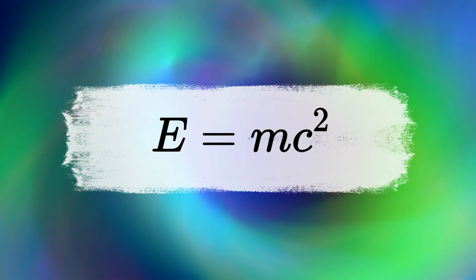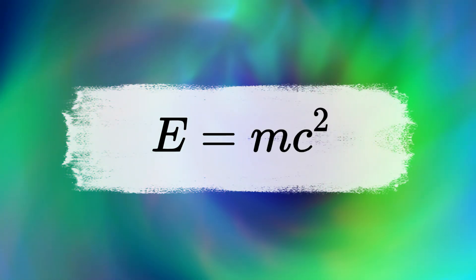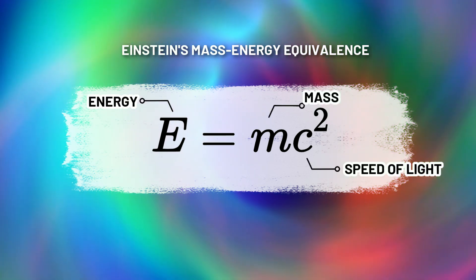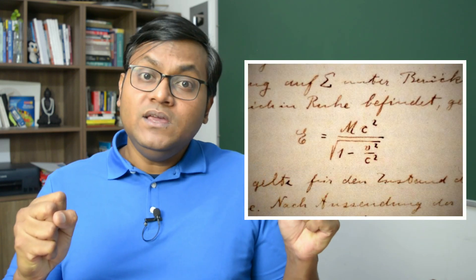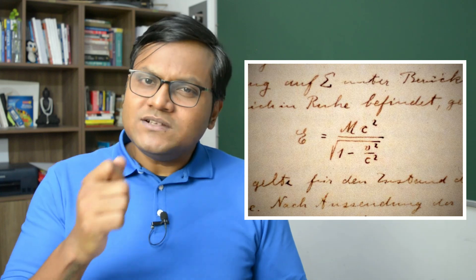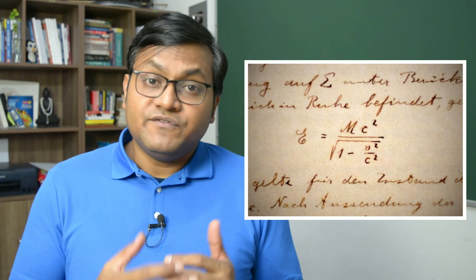The fourth most important equation in physics is the most famous one — Einstein's Mass-Energy Equivalence. This principle says that mass and energy are interconvertible. Before Einstein, energy — the ability to do work — and mass — matter occupying space — were thought to be distinct. Einstein, when he published his papers in 1905, proposed that mass and energy can be converted from one to another according to the formula E=mc², where c is the speed of light.